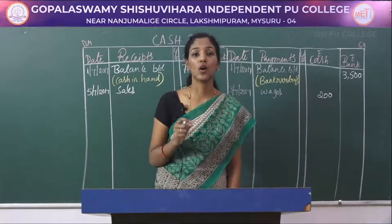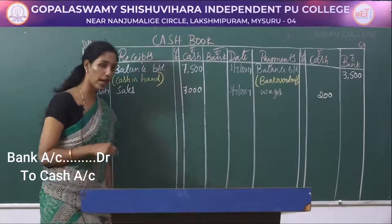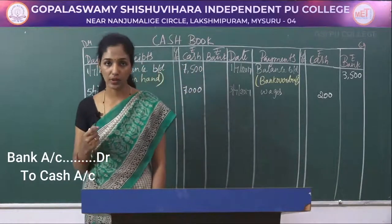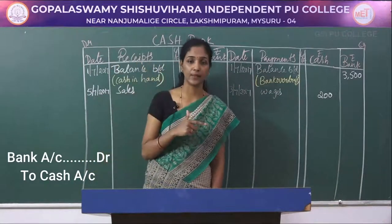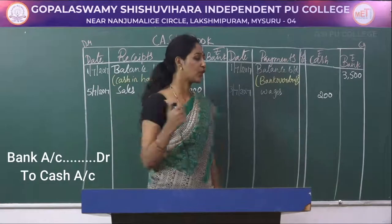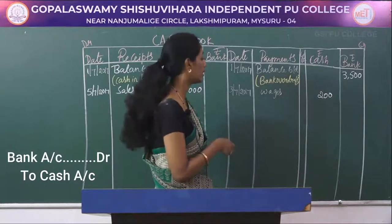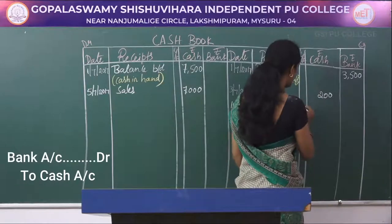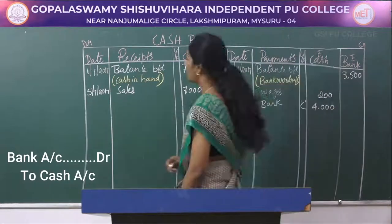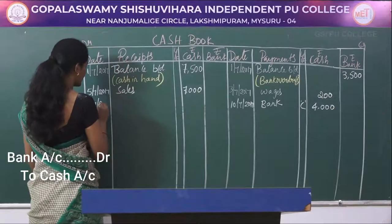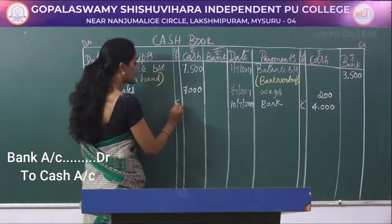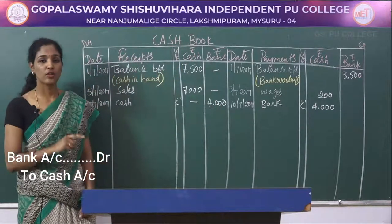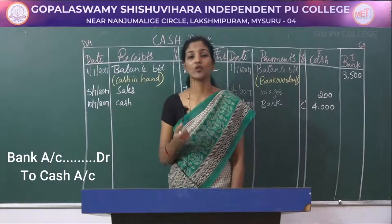As on 10/7/2017: cash deposited into bank rupees 4000 — this is a contra entry, so it must be recorded on both sides of the double column cash book. The journal entry is: bank account debited, cash account credited. On the credit side write 10/7/2017 'bank', enter rupees 4000 in the cash column with capital letter C in the ledger folio. On the debit side write 10/7/2017 'cash' with capital letter C, and enter rupees 4000 in the bank column.